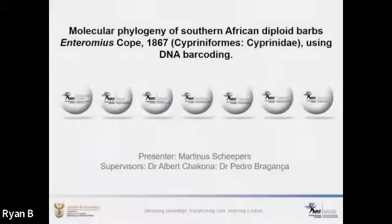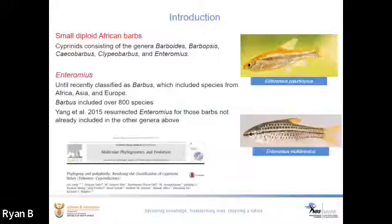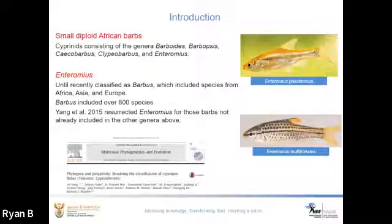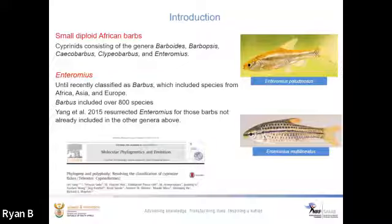Our next presentation is by Martinez, who is also a PhD student. Good morning everyone. I'm Martinez and thanks for listening to my talk about the molecular phylogeny of southern African diploid barbs in the genus Enteromius using DNA barcodes. The small diploid African barbs are cyprinids from 15 genera including Barboides, Barbus, Clypeobarbus, and Enteromius. Enteromius was until recently classified under Barbus, which included species from Africa, Asia, and Europe and comprised over 800 species. In 2015, Yang et al. resurrected Enteromius to distinguish the small African diploid barbs from the Asian true Barbus.